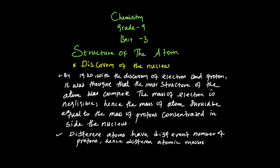Its value is 1.76 times 10 to the power of 8 coulombs per gram. The charge of the electron was determined by Robert Millikan using the oil drop experiment; its value is 1.6 times 10 to the power of minus 19 coulombs. By combining the charge-to-mass ratio and the charge of an electron, the mass of an electron can be determined. The mass of an electron equals charge divided by charge-to-mass ratio: 1.6×10⁻¹⁹ divided by 1.76×10⁸, which equals 9.11×10⁻²⁸ grams.